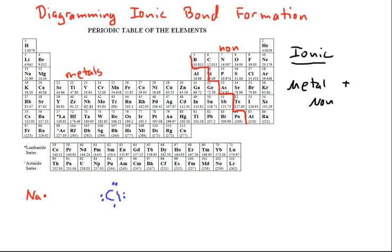When this ionic bond is going to form between sodium and chlorine, sodium will donate an electron. That electron will be transferred to the chlorine, which is an electron acceptor. So that electron will go right here. This is going to stabilize the chloride ion, giving it a negative charge. It goes from an electron configuration of 3P5 to now 3P6.